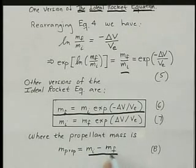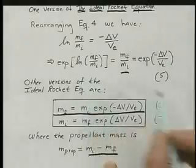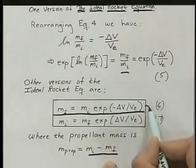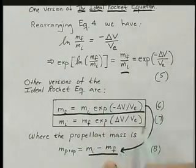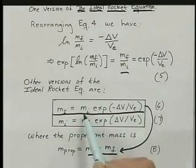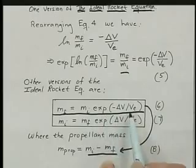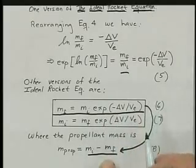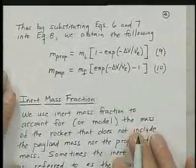If I plug in for m final, if I take this value and plug it in here, then I have m I minus m I times exponential of minus delta VE, and I get equation 9.